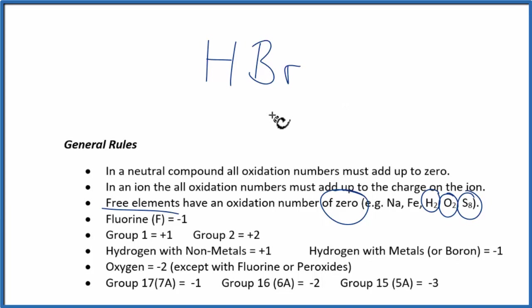Hydrogen, when it's bonded to a non-metal, and bromine's a non-metal, plus one. Now, these all need to add up to zero. So the bromine, that's going to be minus one, which is what we expect. It's in group 17, sometimes called 7A, and those are minus one.